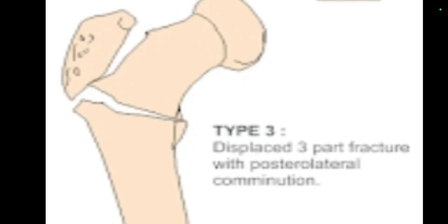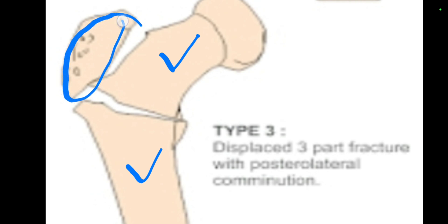Next is Type 3. In Type 3, we have a three-part fracture instead of two parts. The first part, the second part, and an additional third part involving the greater trochanter or the posterolateral combination.